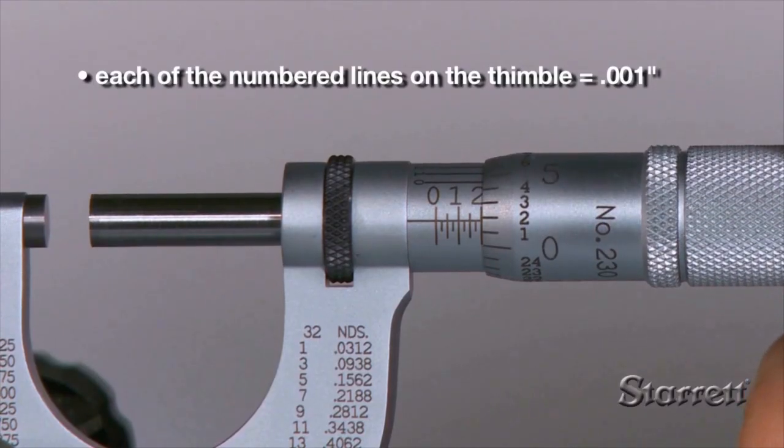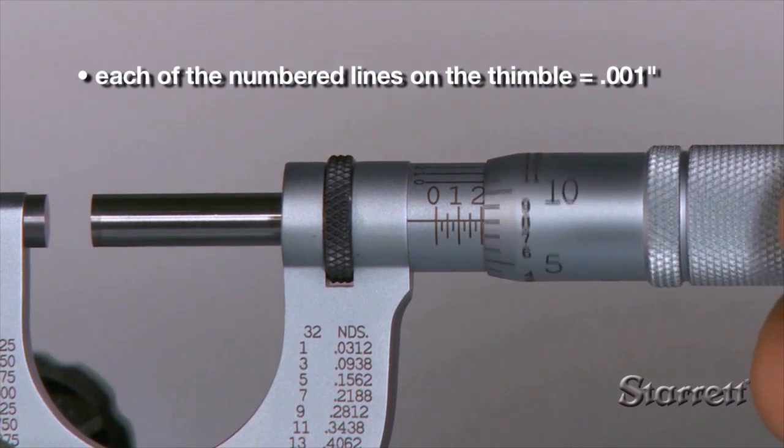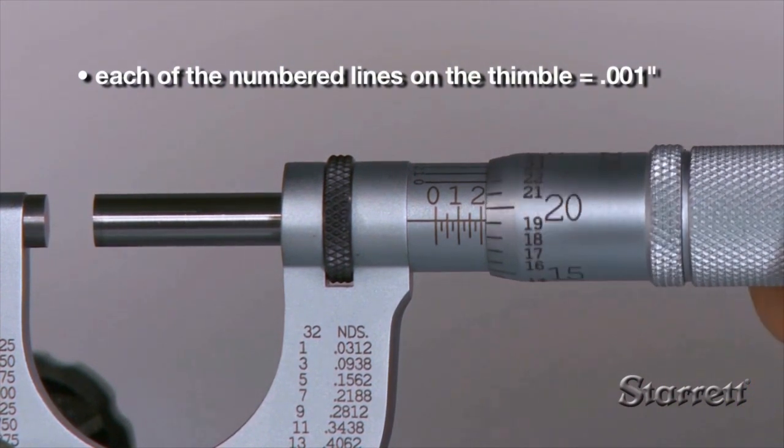The thimble has 25 evenly spaced lines around its circumference, each representing one thousandth of an inch.